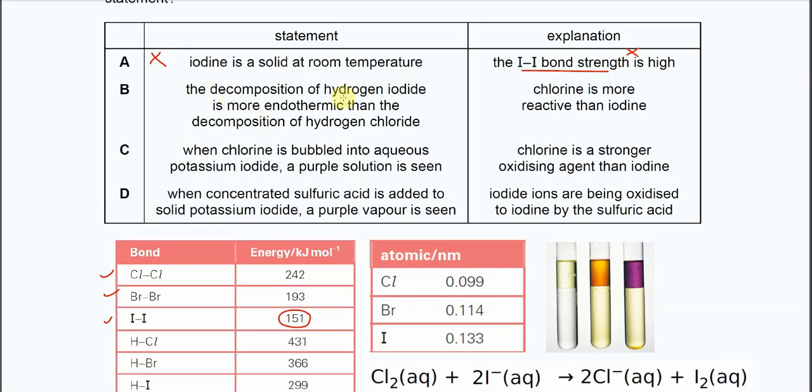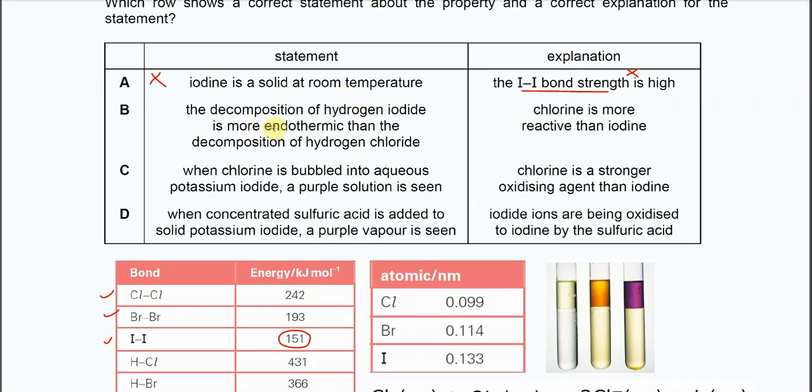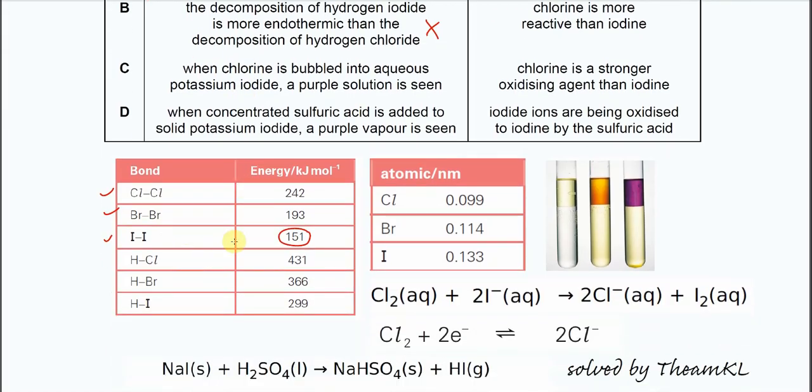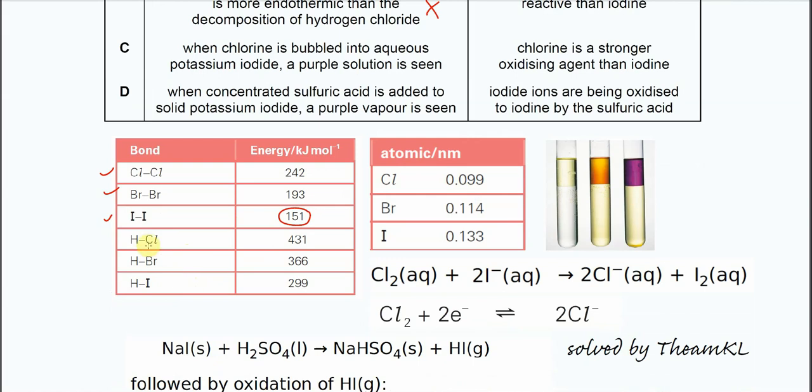For B, the decomposition of the hydrogen iodide is more endothermic than decomposition of hydrogen chloride. This statement itself is wrong because decomposition of hydrogen iodide needs heat or the bond breaking. So if we compare the bond energies of this HCl, HBr, HI, we know that more energy is needed to break the HCl bond compared to HI. So therefore, the HCl actually needs more heat.